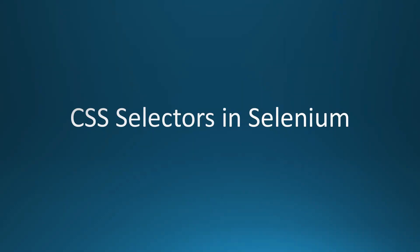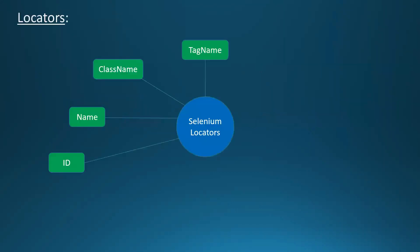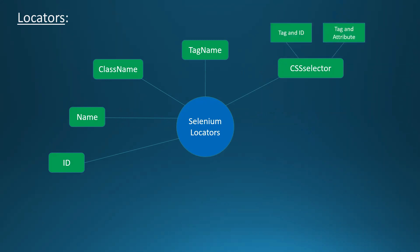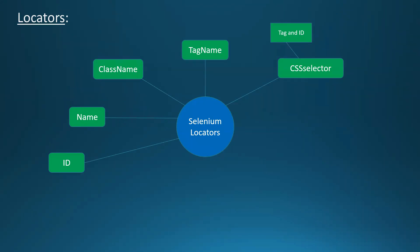In this video we are going to discuss CSS selectors. CSS selectors are divided into four types: tag and id, tag and attribute, tag and class, and tag, class and attribute. We discussed this in the last video as well. Now we'll see each of these with an example, starting with tag and id.